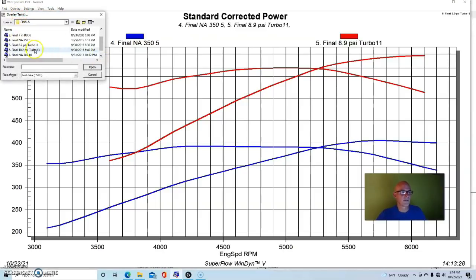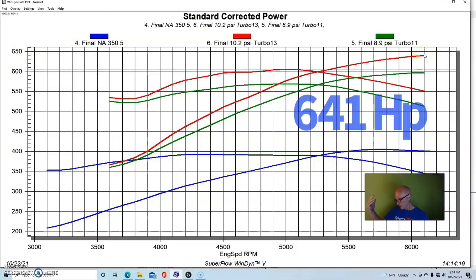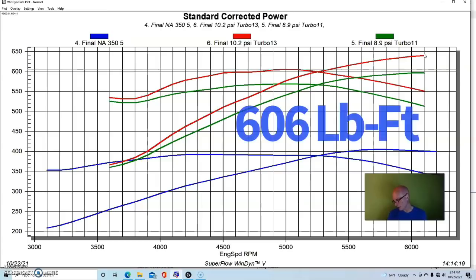Then we turned it up a little bit more to a little over 10 pounds, and the power output jumped up to 641 horsepower. So if you need a quick extra 30, 40, 50 horsepower, all you gotta do is turn the boost up a little bit. In this case it was less than or a little over a pound of boost. Peak torque checked in at 606 foot-pounds.